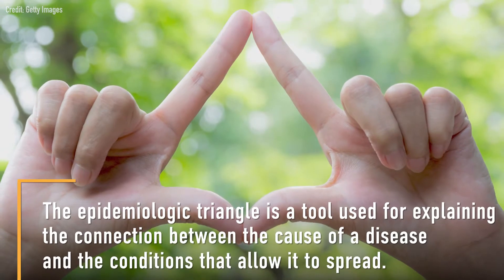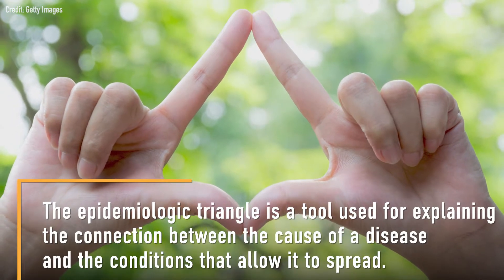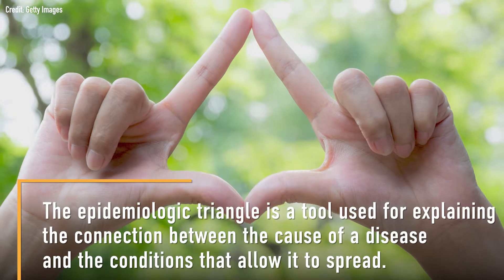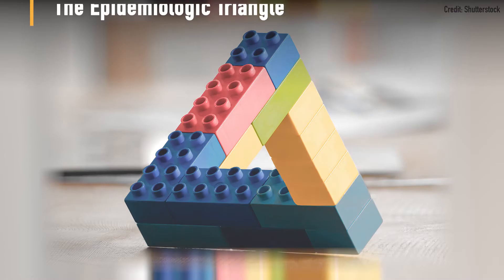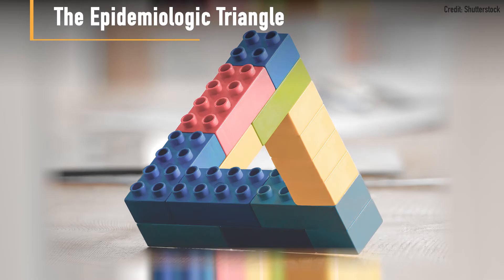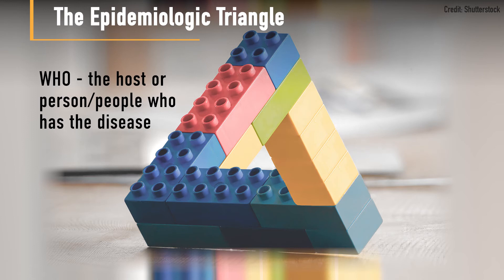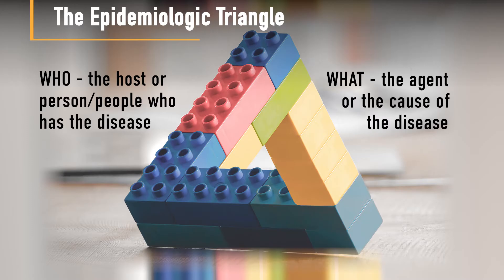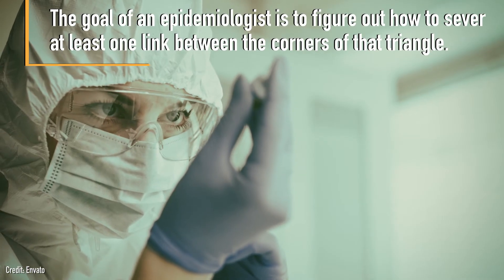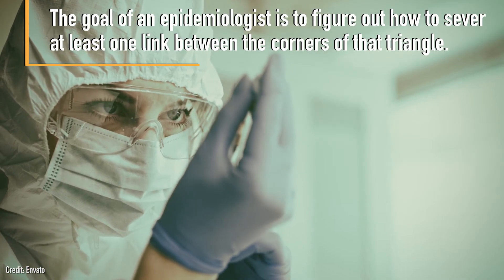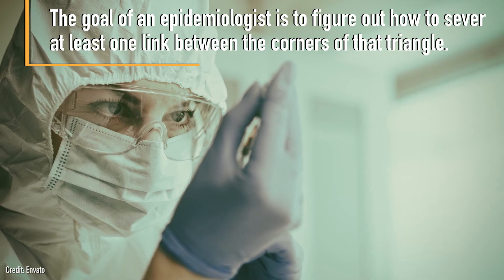The epidemiologic triangle is a tool epidemiologists use for explaining the connection between the cause of a disease and the conditions that allow it to spread. The triangle's three corners represent the who, what, and where of a disease. Who is the host, or person or people who has the disease? What is the agent, or cause of the disease? And where, or in what environment, does the disease occur? The goal of an epidemiologist is to figure out how to sever at least one link between the corners of that triangle.